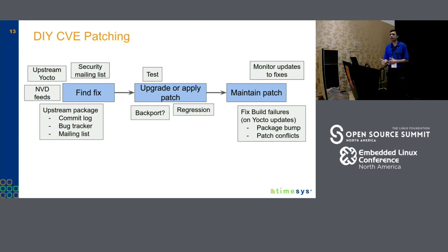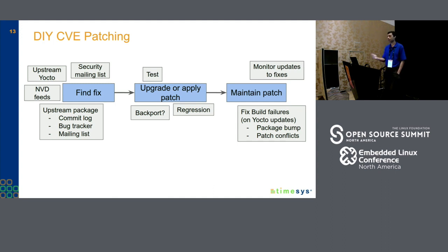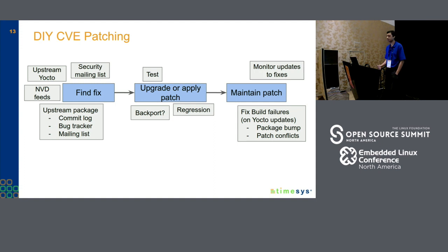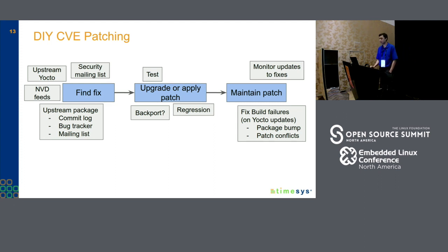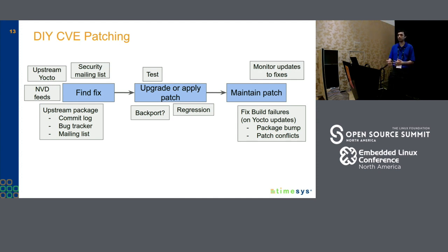So now that you have a prioritized list of CVEs to fix, how do you go about patching them? One option is to see if the latest version of software already fixes it — if so, upgrade to the latest version. Otherwise, look at the reference links in NVD to find the commit ID or where the patch resides for that CVE, and backport it yourself. You can also look at commit logs from upstream packages — typically people tag CVE information in those as well. If you do backport, you might have to maintain patches, since the number of CVEs keeps growing and backporting more fixes may lead to conflicts that don't cleanly apply.